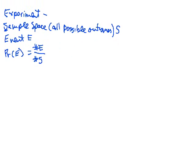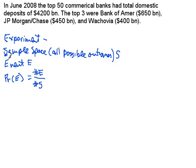Now let's look at an example. This is some information pulled from the newspaper: in June of 2008, the 50 commercial banks in the U.S. had a total domestic deposit of $4.2 trillion. The top three were Bank of America, JPMorgan Chase, and Wachovia. The question we're interested in is: what would be the probability that a dollar of domestic deposits would be held by Bank of America?